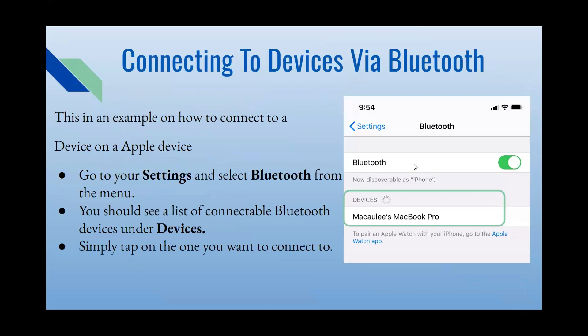Now, how to connect devices via Bluetooth on an Apple device: go to Settings and select Bluetooth. When Bluetooth is on, under 'Devices' you'll see a list of nearby speakers, computers, or any Bluetooth-enabled devices. Simply tap on the one you want to connect to. It will notify you if connected. If it's not working, try turning Bluetooth off and back on — it might just be a small glitch.